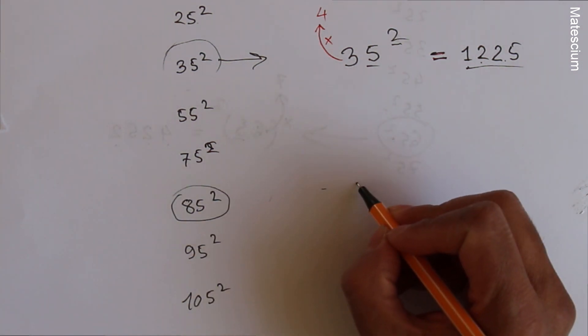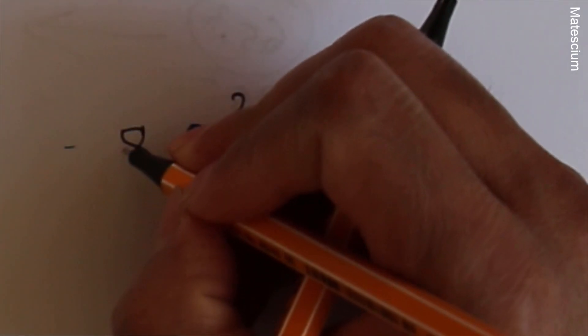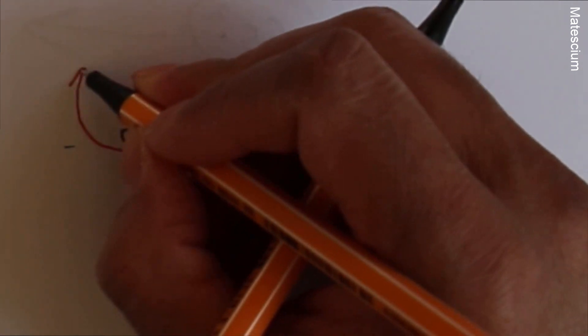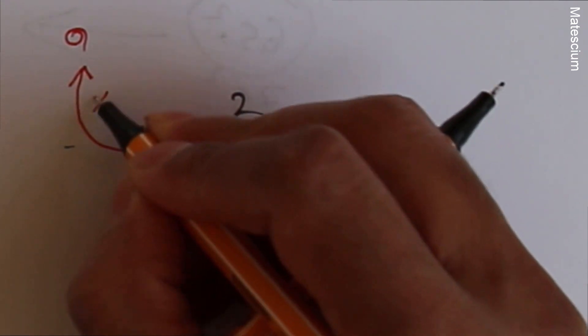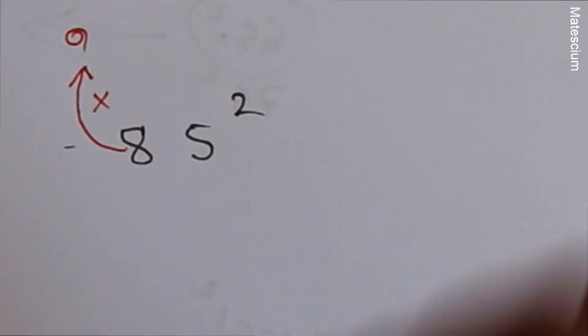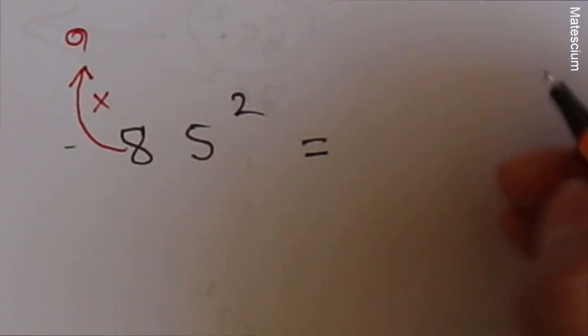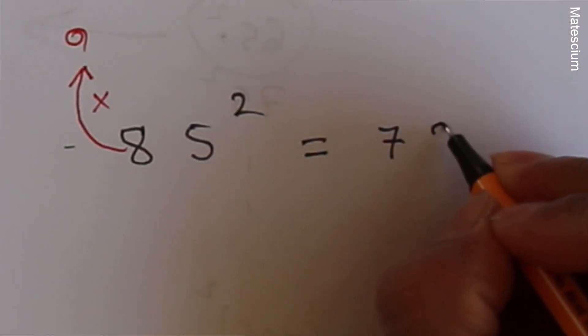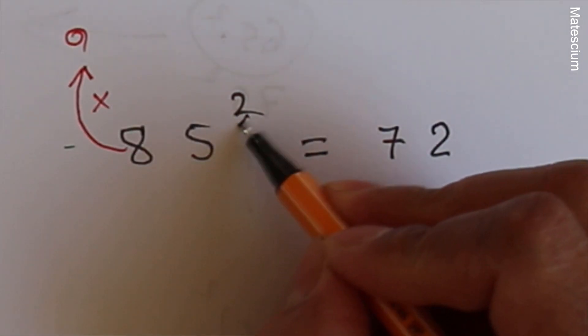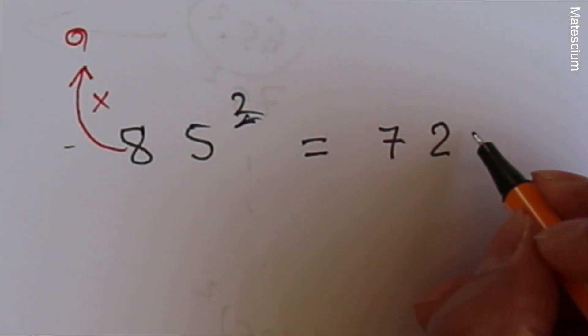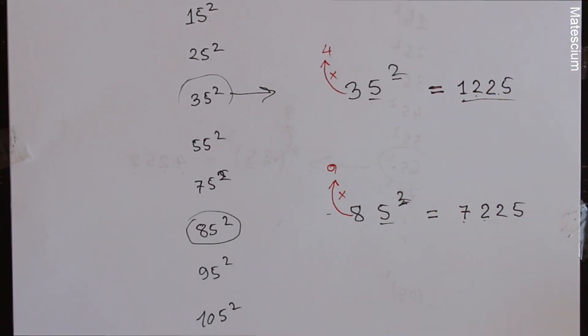How to calculate 85²? Exactly the same way. What I have to do: I have to imagine exactly immediate next number of 8 which is 9. Then I have to multiply this 9 by 8. That means 9 times 8 is 72. And then you have to write 5² as 25. That means 7225 is the answer.